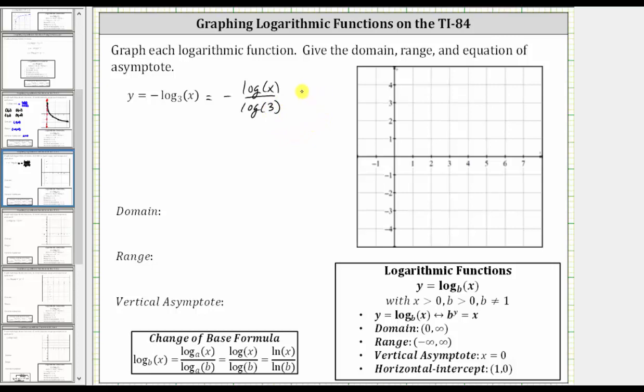Now before we graph this, we should be able to recognize, because we just have log base three of x here, where the input is just x, the domain is going to be x greater than zero, or the open interval from zero to infinity, and the vertical asymptote is going to be the line x equals zero. This negative sign is not going to change the range. The range is still all real numbers, or the open interval from negative infinity to positive infinity. Let's go ahead and record this, but we'll also check it graphically.